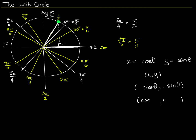Let's use that green point and describe its coordinates — it's the cosine of an angle comma the sine of an angle. We're at 2 pi over 6, so pi over 3. So it's cosine pi over 3, sine pi over 3. We know that the cosine of pi over 3 from our table is one half and the sine is root 3 over 2. Those are the coordinates of that point.